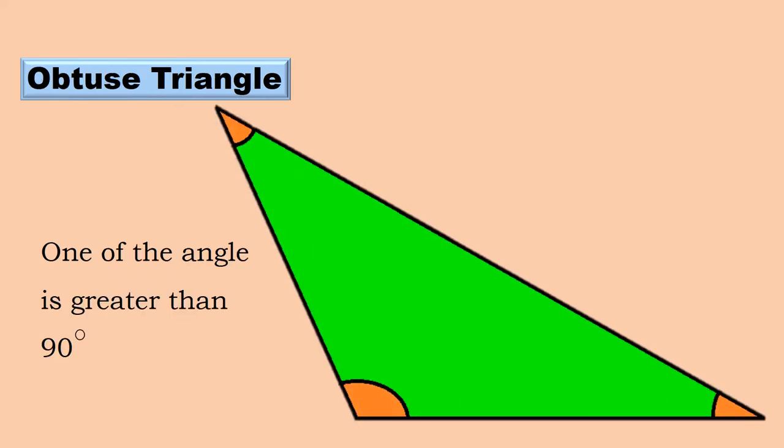Obtuse Triangle. On this triangle, one of its angles is greater than 90 degrees.